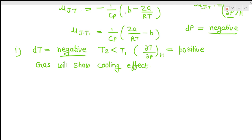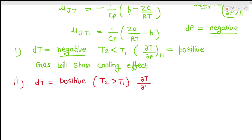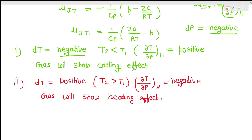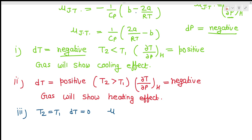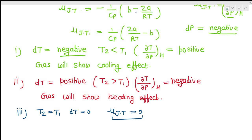The second condition is when dT is positive, meaning T2 is greater than T1. Then (del T / del P) at constant H will be negative, because dP is negative but dT is positive. In this condition the gas will show a heating effect. The third condition is when T2 equals T1 or dT is zero. In that condition mu_JT will be equal to zero, meaning the gas will neither show cooling nor heating effect.